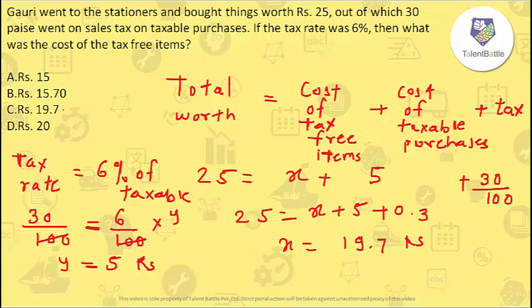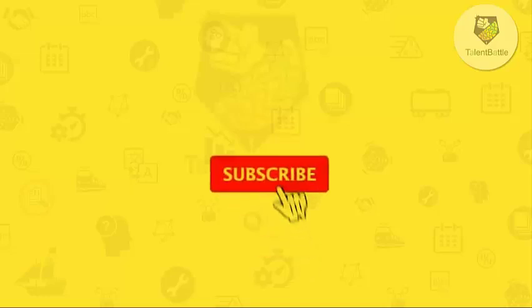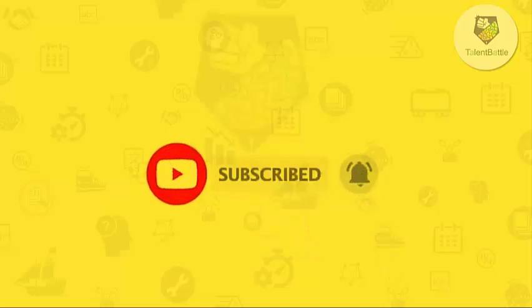The answer for this question is option C — 19.7 rupees. From the given tax rate you calculate the cost of taxable purchase items, and once you do that it is easy to find the cost of tax-free items. If you like this video click the like button; for any doubts, suggestions, or feedback please comment. Subscribe to our channel for placement updates and press the bell icon for notifications. Thank you.